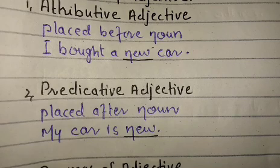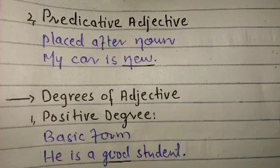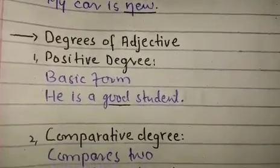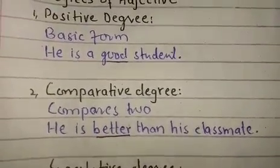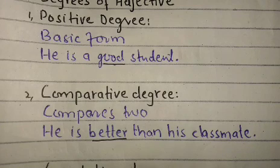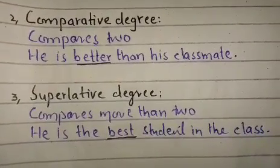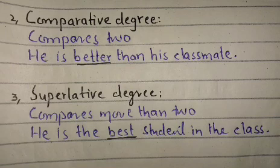There are three degrees of adjective. The positive degree is the basic form with no comparison — for example, 'he is a good student.' The comparative degree compares two things or two people — for example, 'he is better than his classmate.' The superlative degree compares more than two — for example, 'he is the best student in the class,' meaning he is compared with all other students.